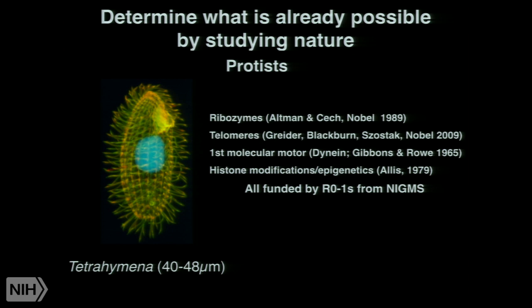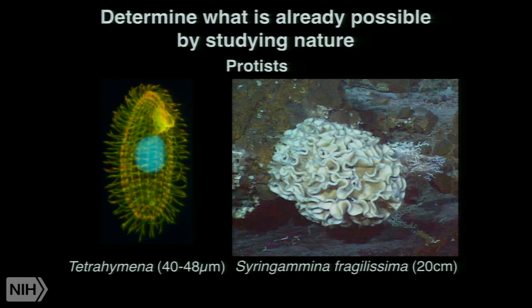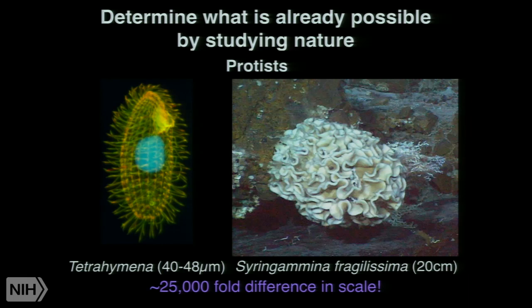What we stand to gain is immense and we just don't have an appreciation for how immense it is. We don't even know what the genotypic and phenotypic space these organisms occupy. Take for example Syringamina fragilissima — it is about 20 centimeters in size. It is a protist, a unicellular organism. This is a change in scale of approximately 25,000 fold. A unicellular organism can occupy space that ranges from the microscopic to the visible with the naked eye — that's the genotypic, phenotypic space that single-cell species actually occupy. If you extrapolate that to all the other diversity of organisms that are out there, it should really boggle your mind.